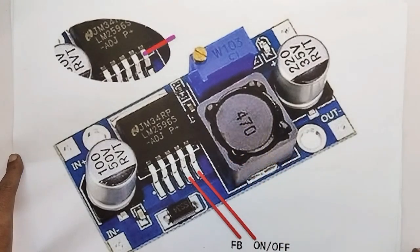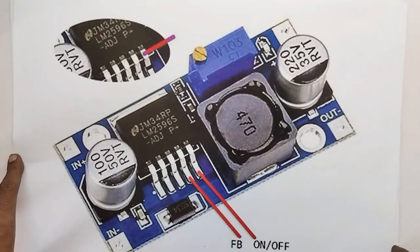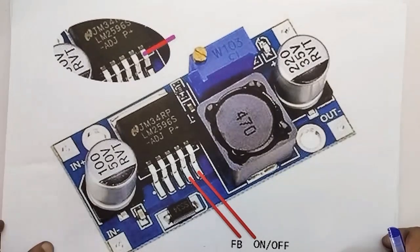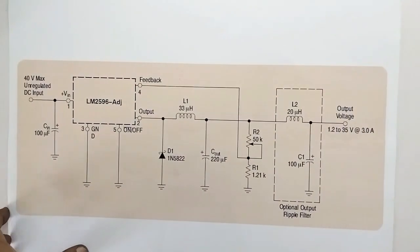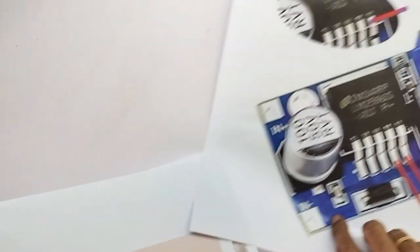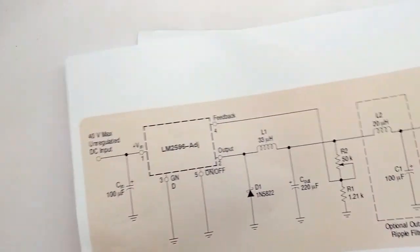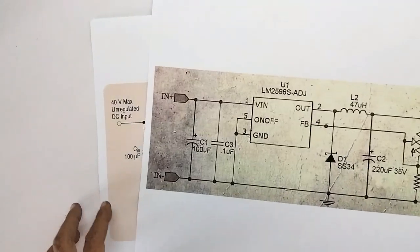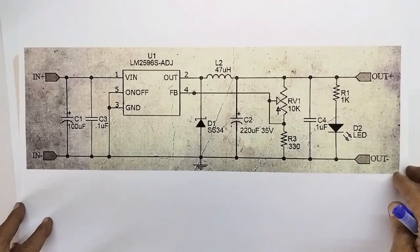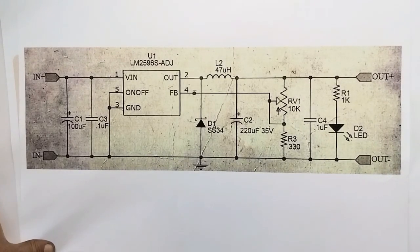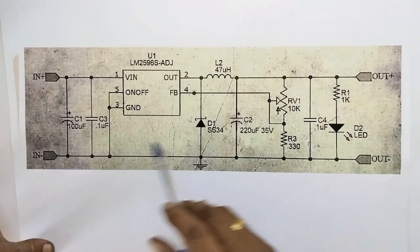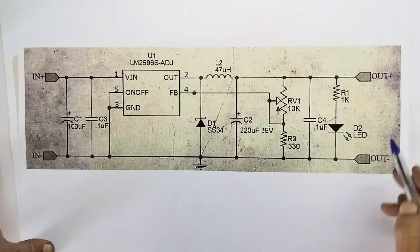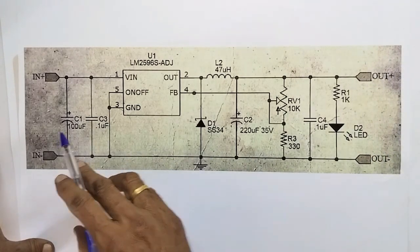This is the last class of schematic diagram. We will explain it. Here are the circuits — we can do a schematic diagram. Here is the input plus, input minus, output plus, output minus. Input and output.